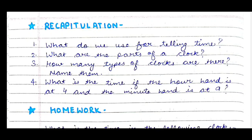After teaching is done, we do the recapitulation part — asking questions to check whether students have understood the concept. Questions include: what do we use for telling time? What are the parts of a clock? How many types of clocks are there — name them. And: what is the time if the hour hand is at four and the minute hand is at nine?